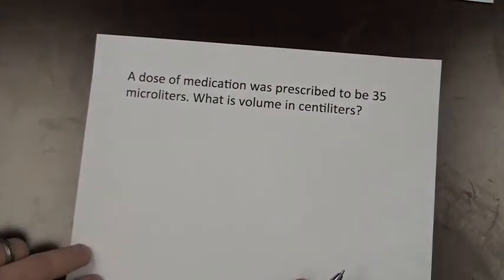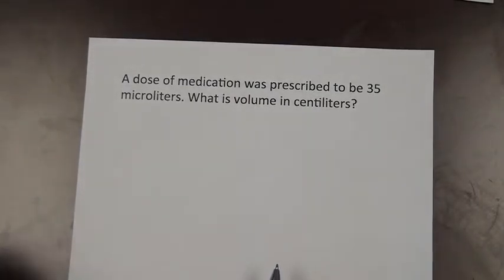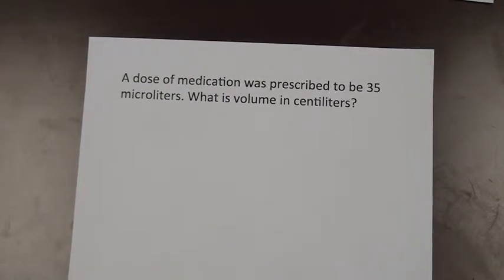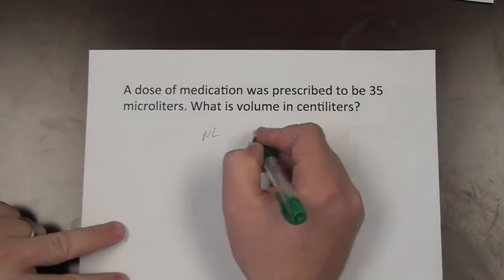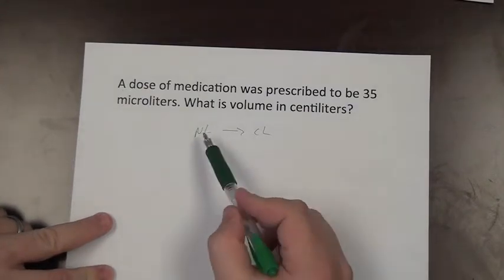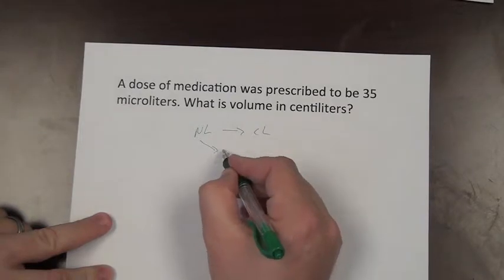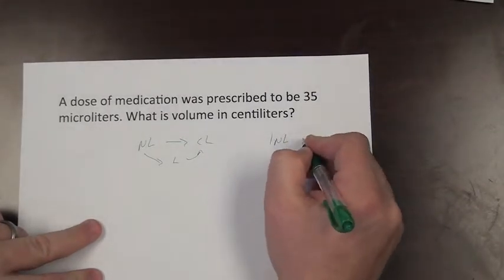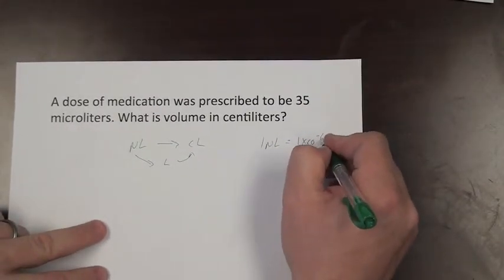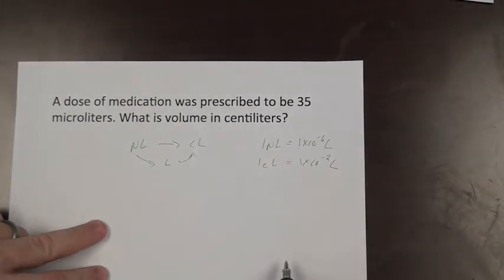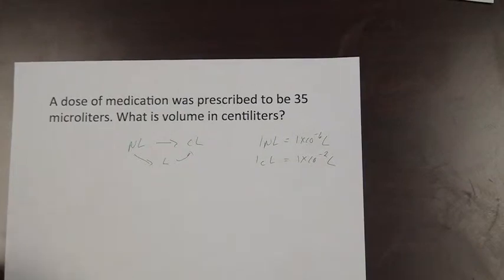A dose of medicine is prescribed as 35 microliters. We need to find this volume in centiliters. The path goes from microliters through the base unit liters, then to centiliters. The conversions are: 1 microliter equals 1 times 10 to the negative 6 liters, and 1 centiliter equals 1 times 10 to the negative 2 liters.